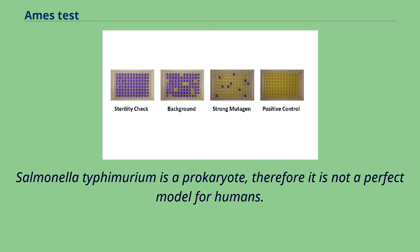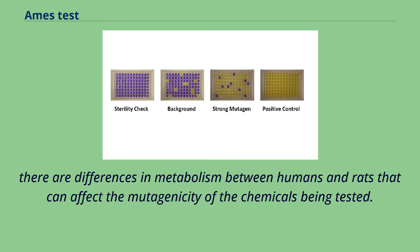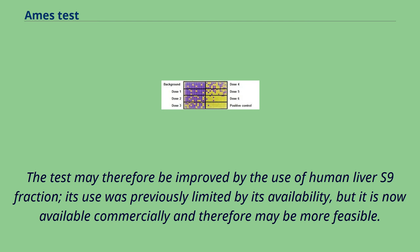Salmonella typhimurium is a prokaryote, therefore it is not a perfect model for humans. Rat liver S9 fraction is used to mimic the mammalian metabolic condition so that the mutagenic potential of metabolites formed by a parent molecule in the hepatic system can be assessed. However, there are differences in metabolism between humans and rats that can affect the mutagenicity of the chemicals being tested. The test may therefore be improved by the use of human liver S9 fraction, whose use was previously limited by availability but is now commercially available.